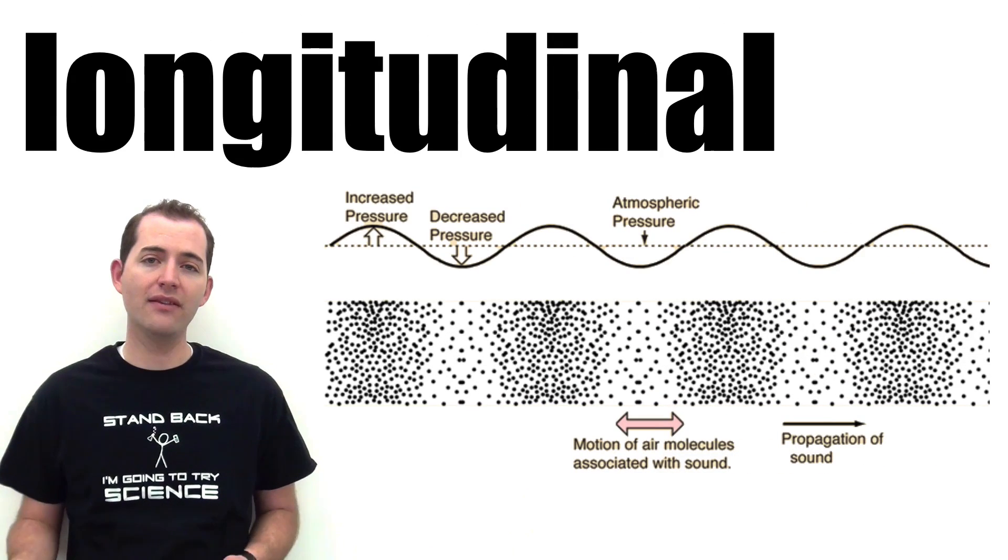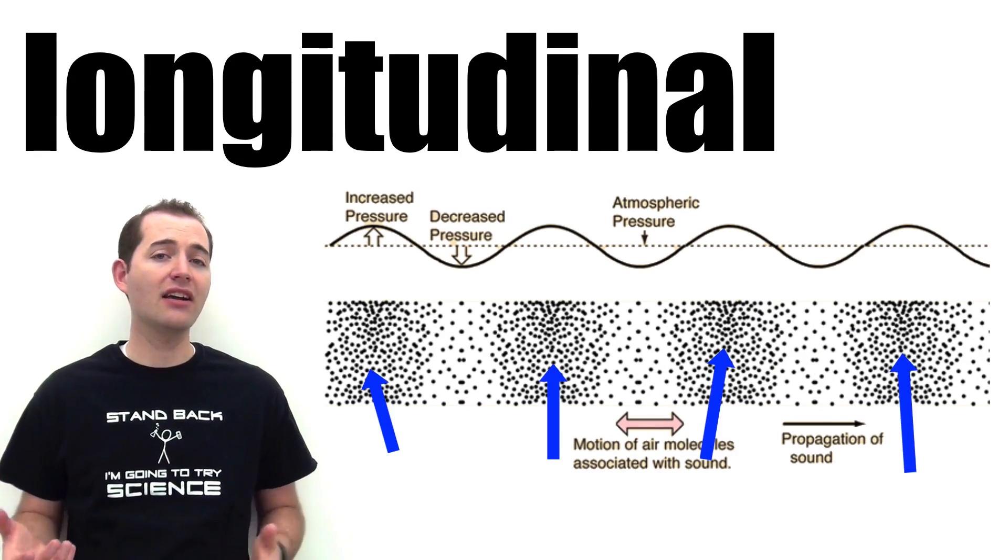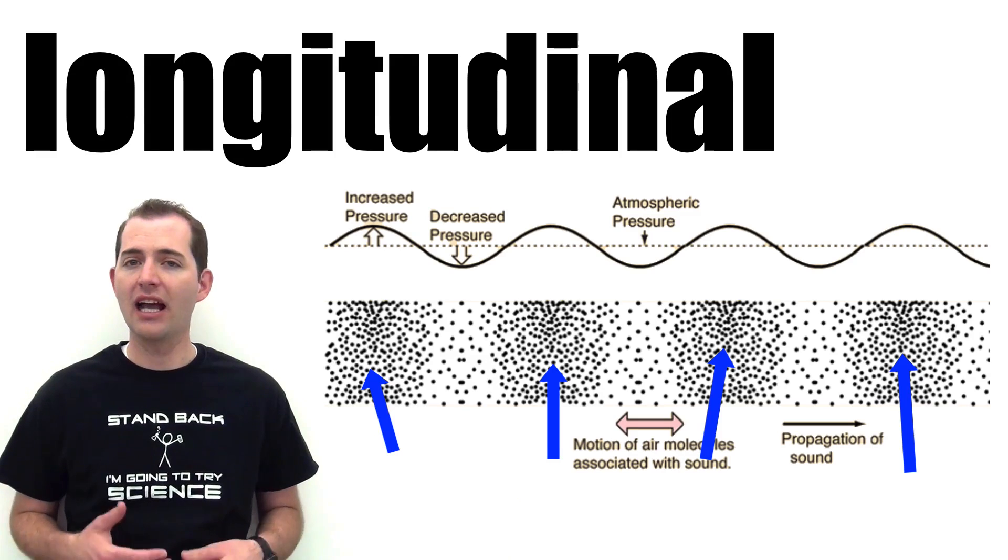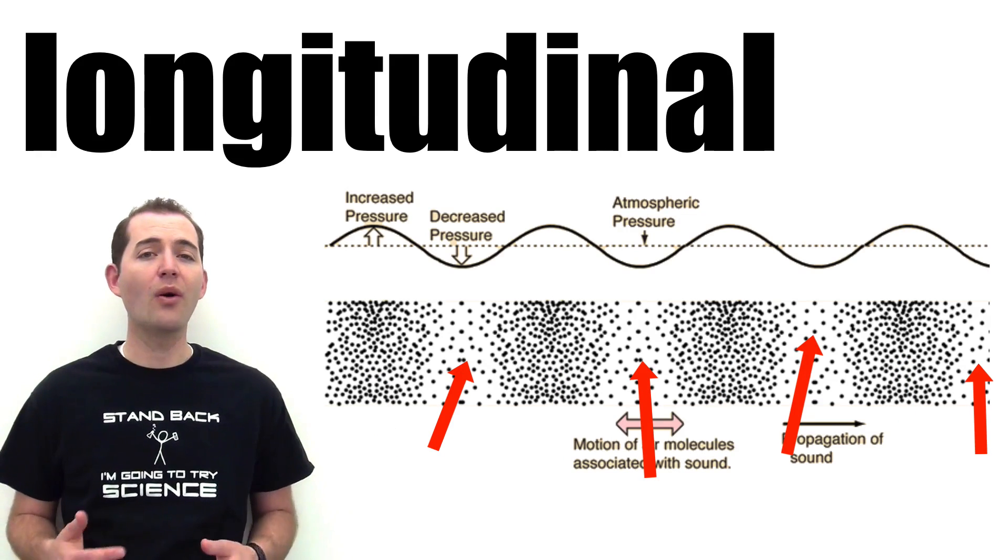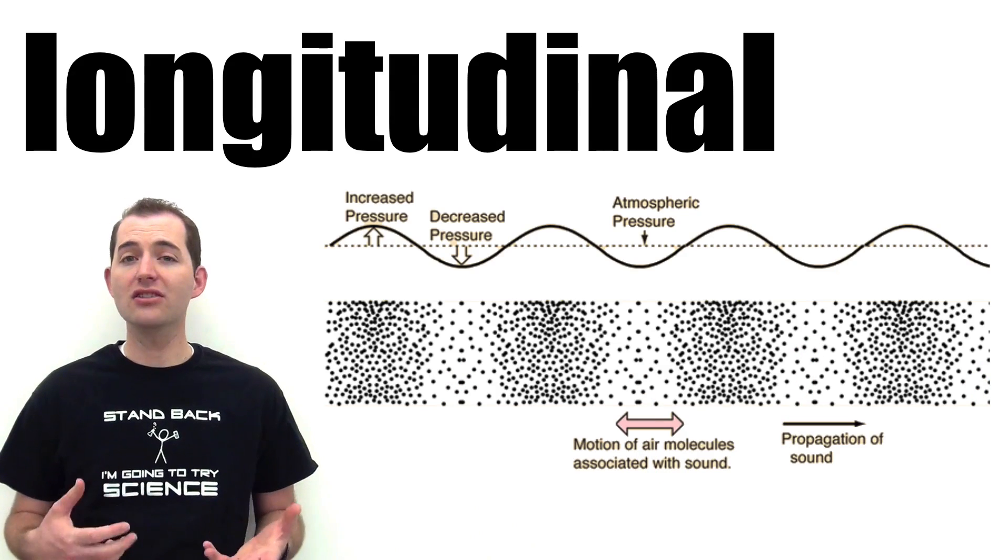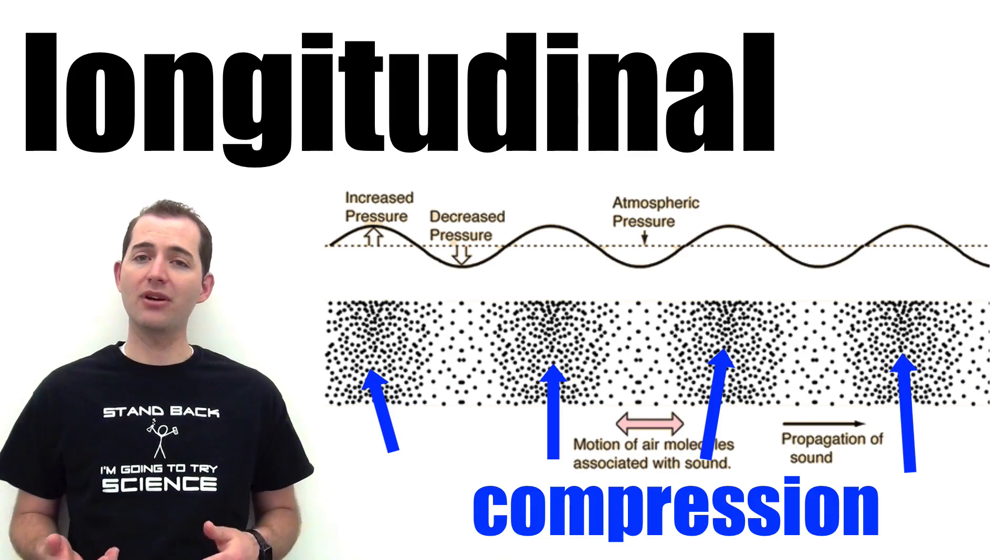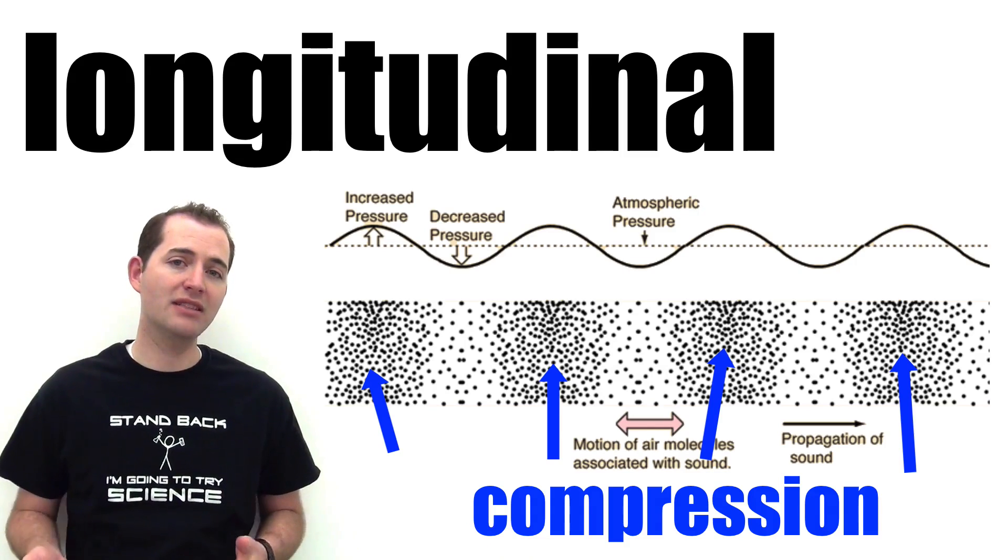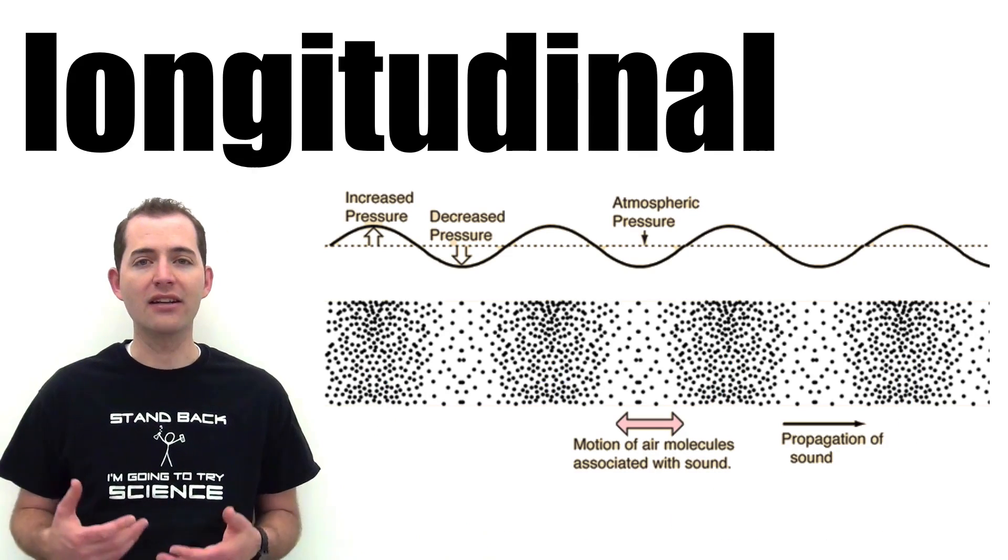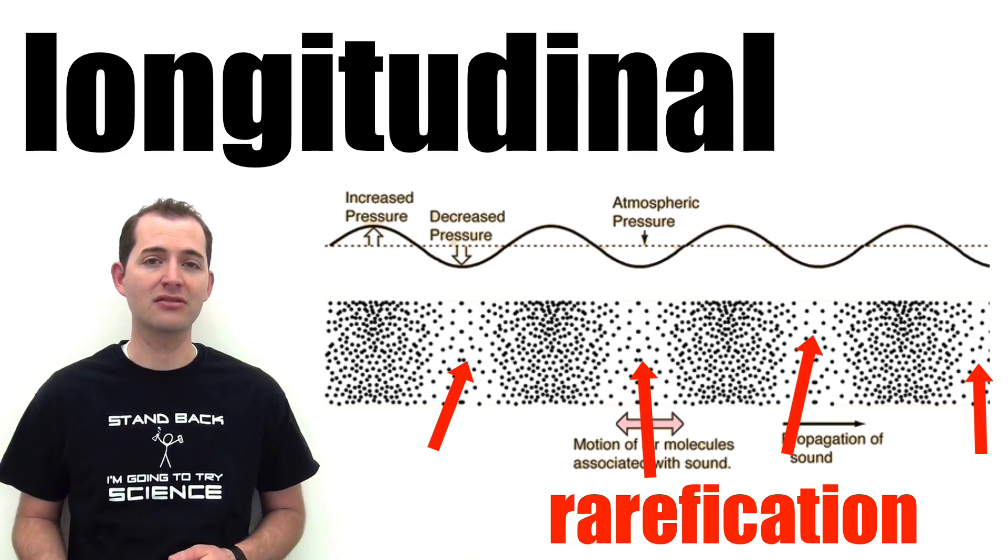If we have a longitudinal wave that is produced by sound, we will have locations of a high concentration of air particles and locations with a low or very small concentration of air particles. These are known as compression and rarefication. The points of compression are where we have the maximum density of air particles and rarefication is where we have the minimum density of air particles.